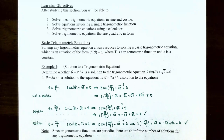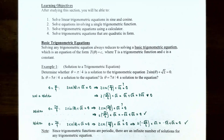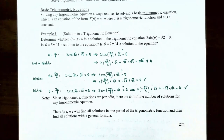There are actually an infinite number of solutions because the sine function is periodic. As long as the angle is in quadrant 3 or 4 and sine equals −√2/2, we have a solution. We'll find all solutions for one period of the trig function, then express the full solution set with a general formula.